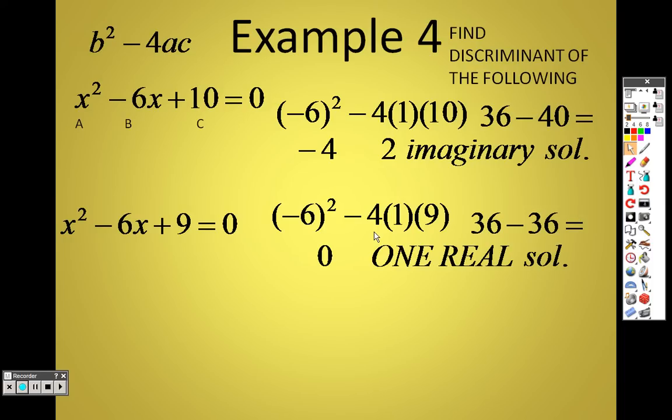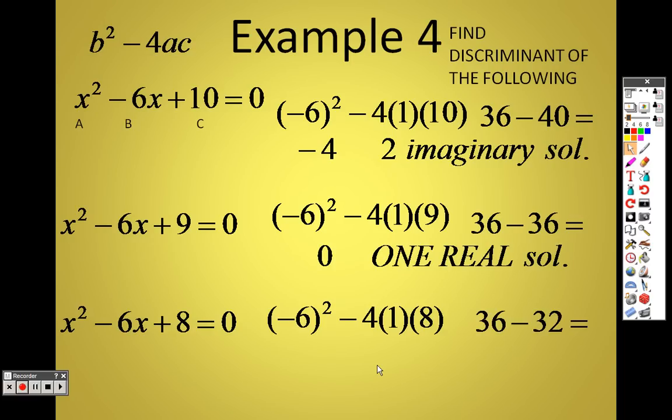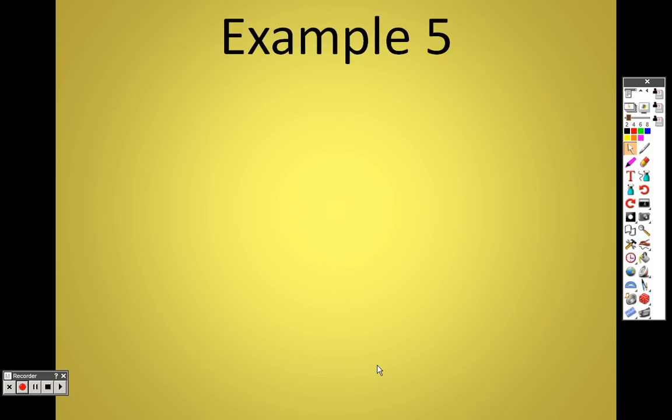And in this problem, we have negative b squared, which is negative 6 squared minus 4 times 1 times 8 for a and c. And then 36 minus 32, which is a positive 4, meaning there's two real solutions. When I come back, I will finish up 5.6 on quadratic equations and discriminants.